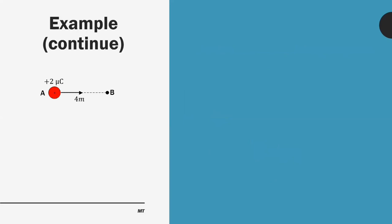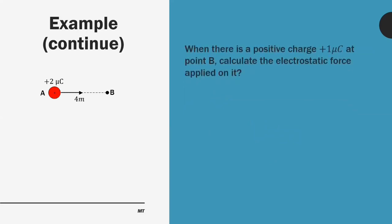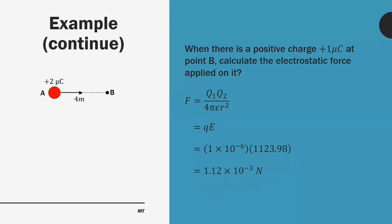Next we're going to look into another example. When there's a positive charge of positive one microcoulomb at point B, calculate the electrostatic force applied on it. Besides using Coulomb's law, we can also use the new formula which is force equal to QE. Substituting the value of Q and the electric field strength calculated previously, we get the value of 1.12 times 10 to the negative 3 newton.